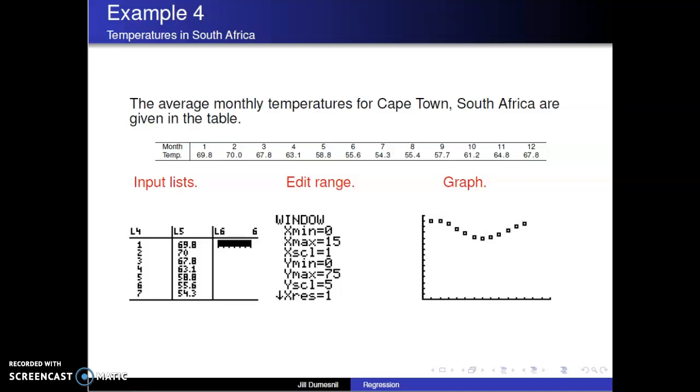Then we adjust the viewing window, 0 to 15 for months and 0 to 75 for temperatures, and select GRAPH. The scatter plot again shows a definite non-linear pattern.